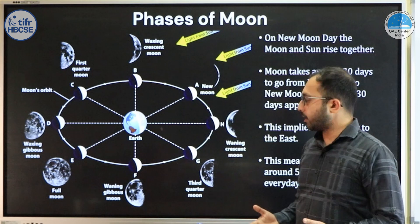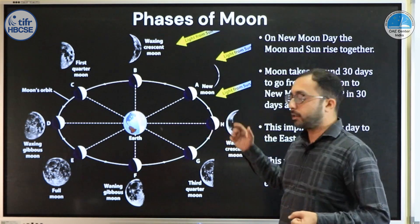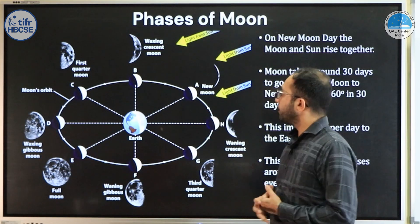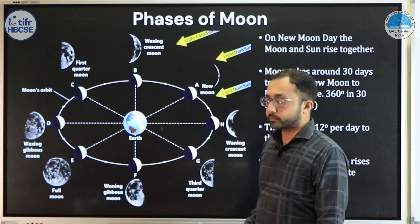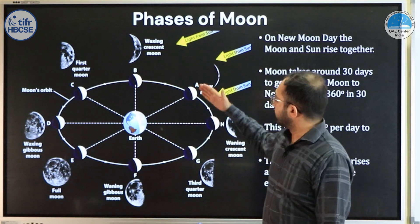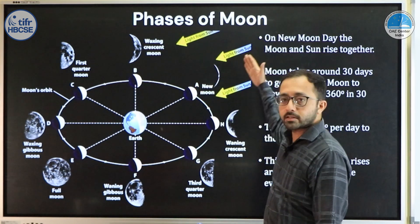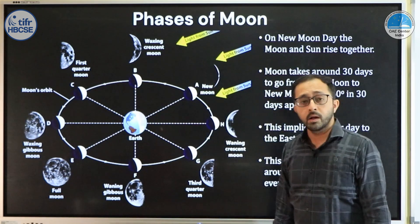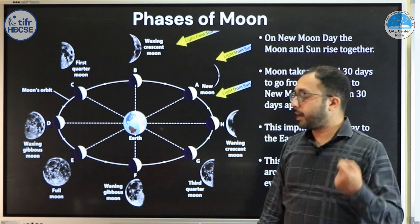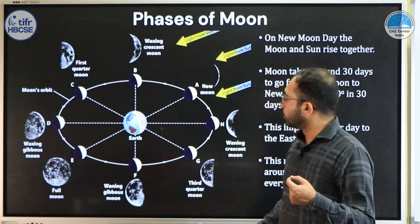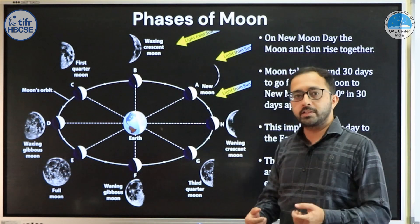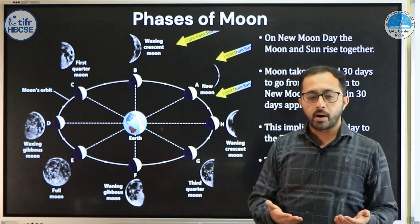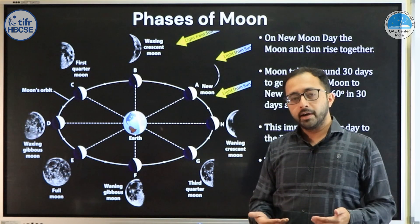The moon and earth, which are spherical in shape, are each half lit because of the sun. The side of these objects facing the sun is bright, and the other side is dark. This is very important. Depending on where the moon is in its orbit around earth, you will see a phase of the moon — that is, how much of the lit part and dark part is visible to an earth-based observer defines the phase of the moon.